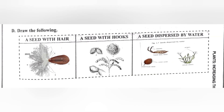Question number five: why is manure added to crops? Answer: manure contains nitrogen, phosphorus, and other nutrients that plants need to grow. Now Part D: draw the following diagrams — a seed with hair, a seed with hooks, and a seed dispersed by water. You have to draw these diagrams in your book.